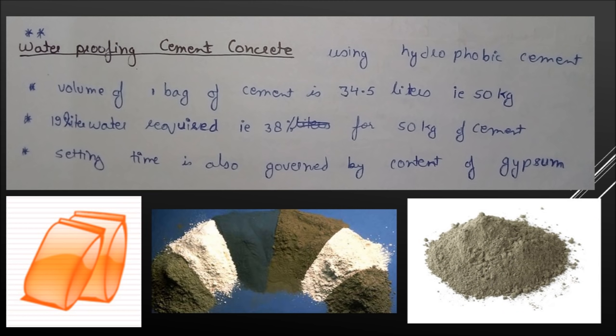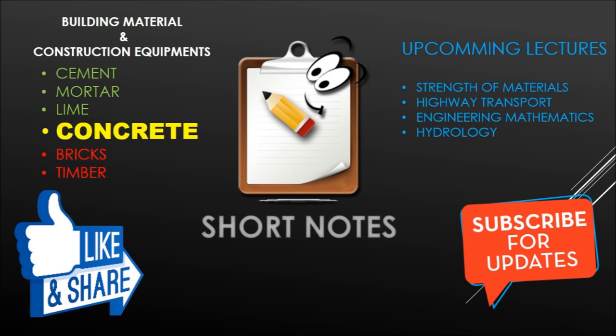Some extra portions to note: First, waterproofing concrete uses hydrophobic cement in waterproofing plasters or POP. Second, a bag of cement has a volume of 34.5 liters, meaning 50 kg of cement equals 34.5 liters. Volume wise, 38% water is used for 50 kg of cement. If we convert a bag of cement in concrete, then 19 liters of water is needed. Gypsum controls the setting time of cement.